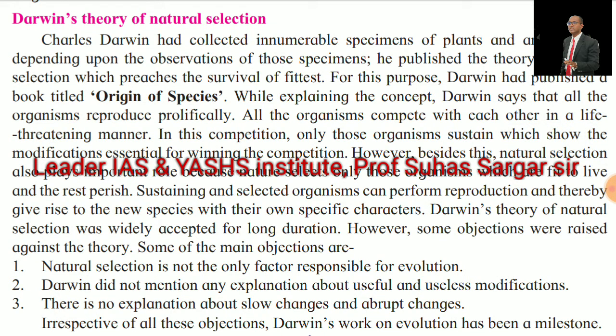Darwin's Theory of Natural Selection: Charles Darwin collected innumerable specimens of plants and animals and published the theory of natural selection, preaching the survival of the fittest, in his book titled 'Origin of the Species.' Darwin says that all organisms reproduce prolifically and compete with each other in a life-threatening manner. Only those organisms sustain which show modifications essential for winning the competition. Natural selection plays an important role because nature selects only those organisms which are fit to live, while the rest perish. Sustaining organisms can reproduce and thereby give rise to new species with their own specific characters.